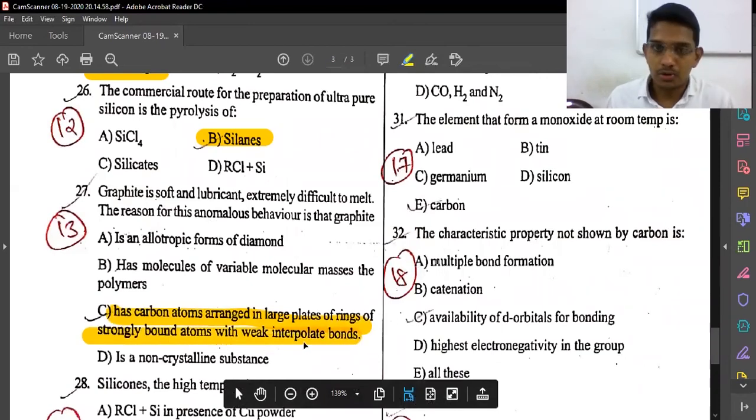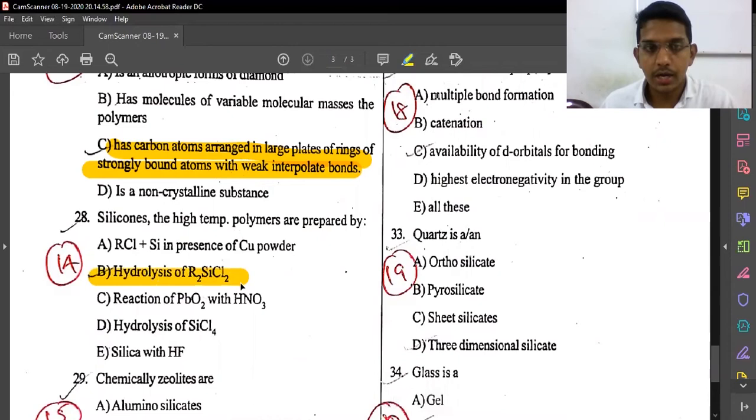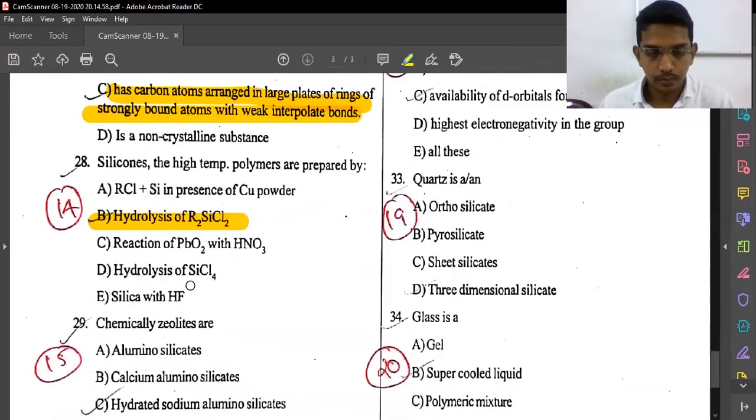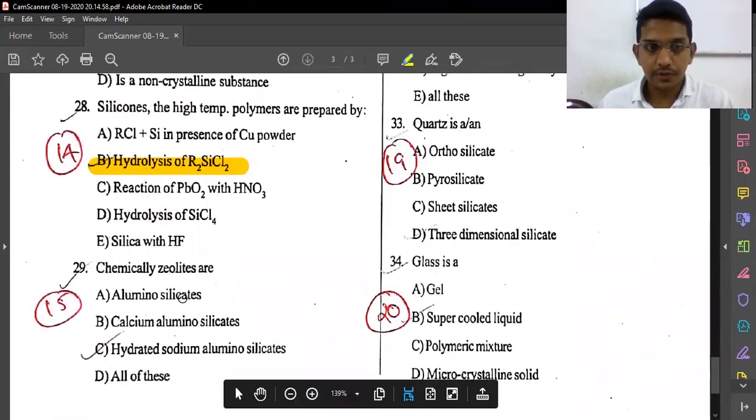Silicones, the high-temperature polymers, are prepared by option B, hydrolysis of R₂SiCl₂. Chemically, zeolites are hydrated sodium aluminosilicates.